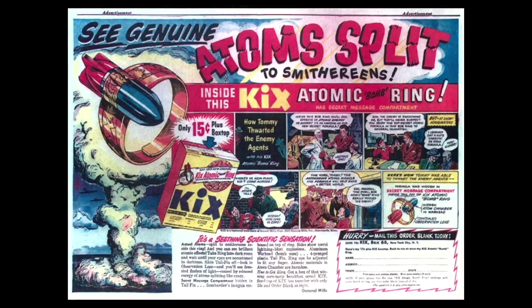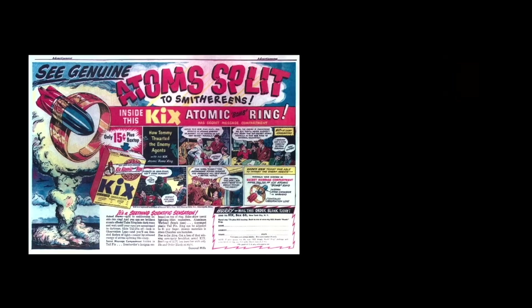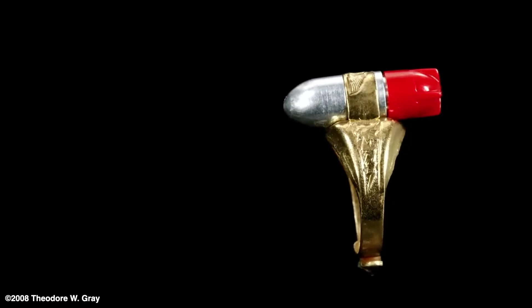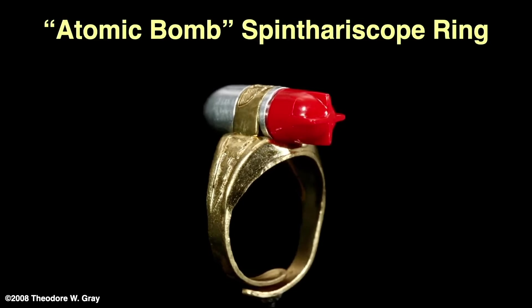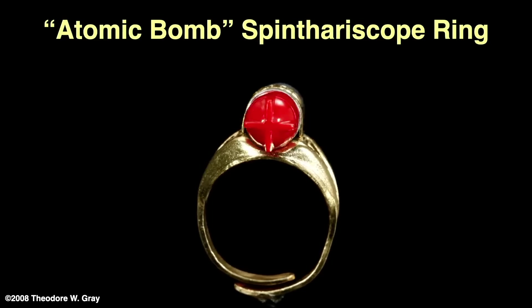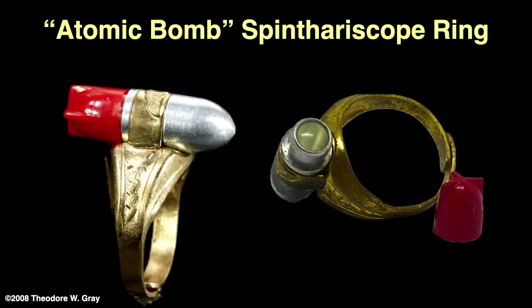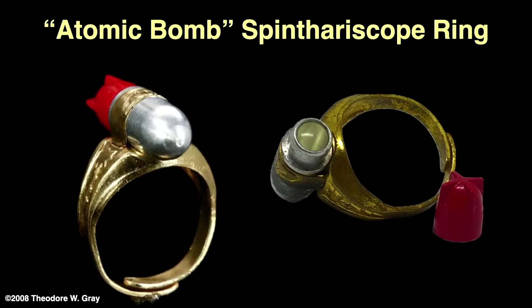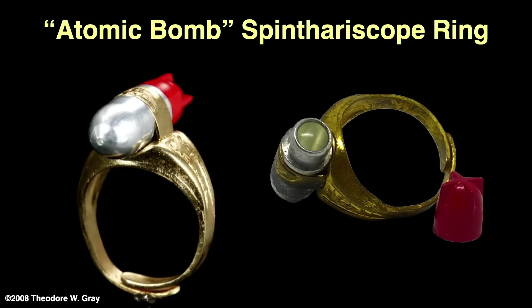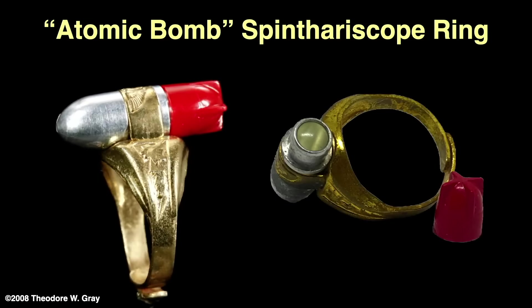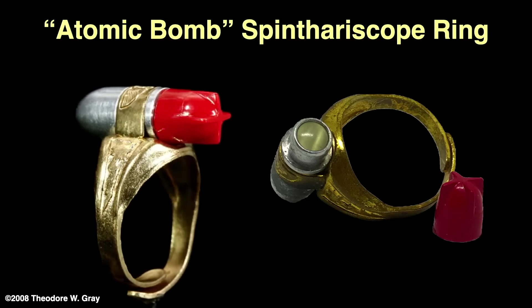One way you can detect alpha particles is to observe tiny flashes of light they make as they hit a phosphorescent screen. This device is called a spinthoroscope. It has a tiny bit of polonium or radium and a screen you observe through a magnifying glass. It's amazing to be able to see actual radiation from the alpha particles hitting the screen. In 1947, for a Kix cereal box top and 15 cents, you could get your own spinthoroscope in the form of an atomic bomb ring. This had a tiny, tiny sample of polonium. You took off the tailpiece and looked through the magnifying glass at the, quote, atoms splitting to smithereens, unquote. Atomic fission, the same as in the atomic bomb.